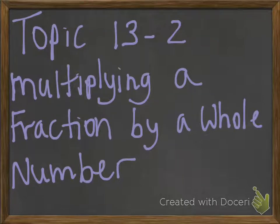Topic 13, Lesson 2: Multiplying a Fraction by a Whole Number. So far you know that a fraction like 3 eighths can be represented by a product of a whole number and a unit fraction — for example, 3 times 1 eighth. In this lesson, you're going to learn how to find the product of a fraction and a whole number.